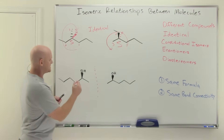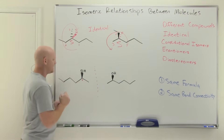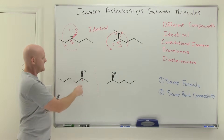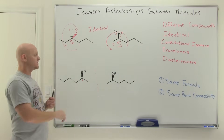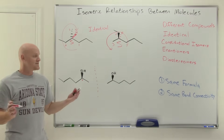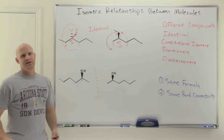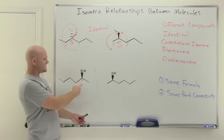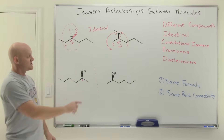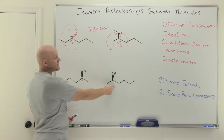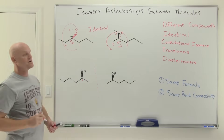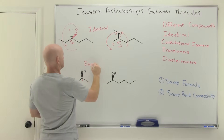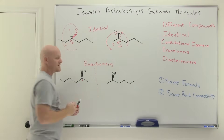In this case, we do have a chiral center: it's bonded to an OH, a methyl carbon, a longer chain carbon, and a hydrogen — four different groups. With just one chiral center, the compound is chiral. This is a chiral compound, and its mirror image is therefore its enantiomer — so these are indeed enantiomers.